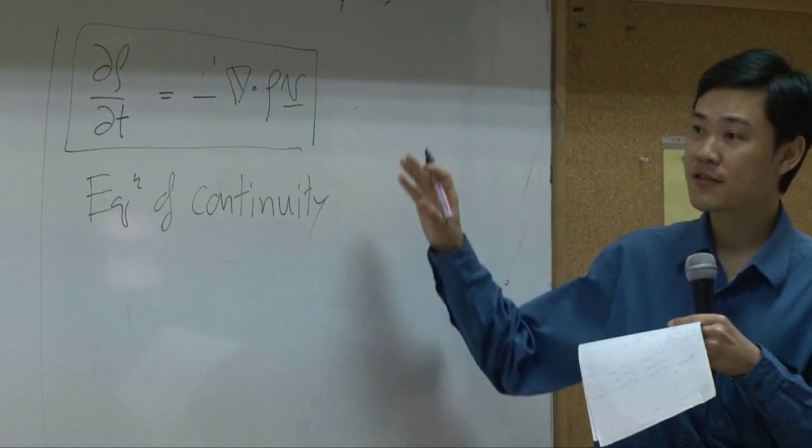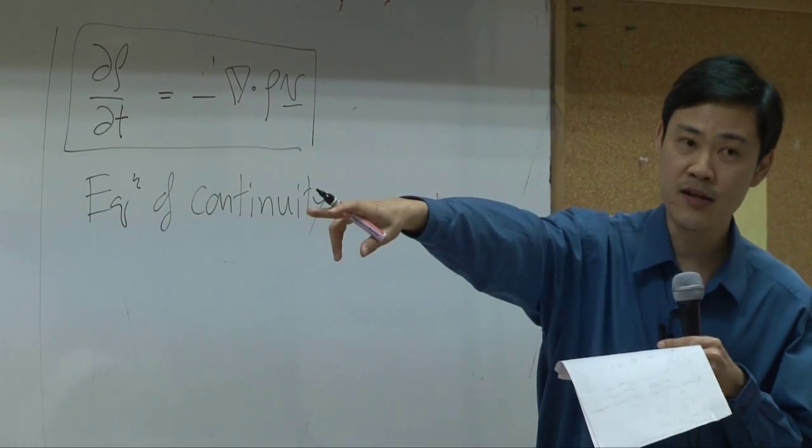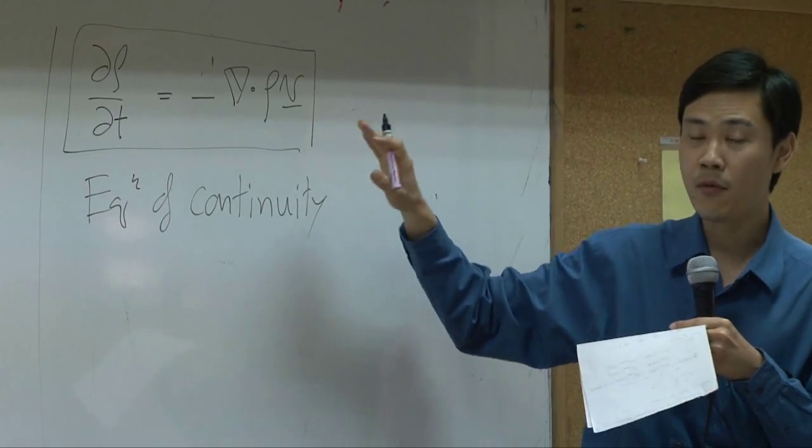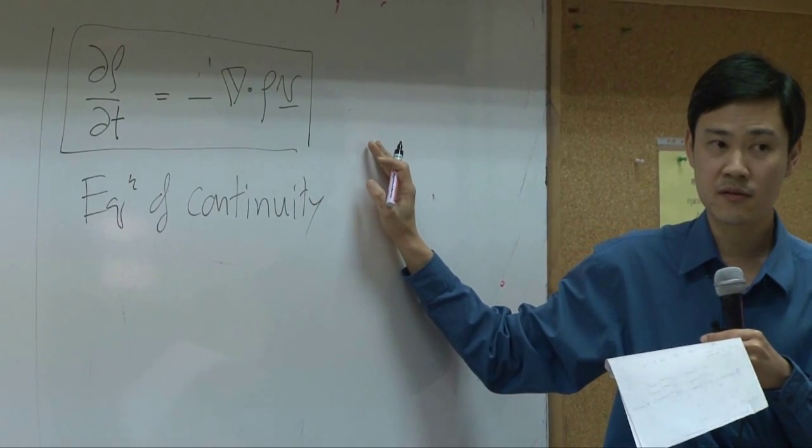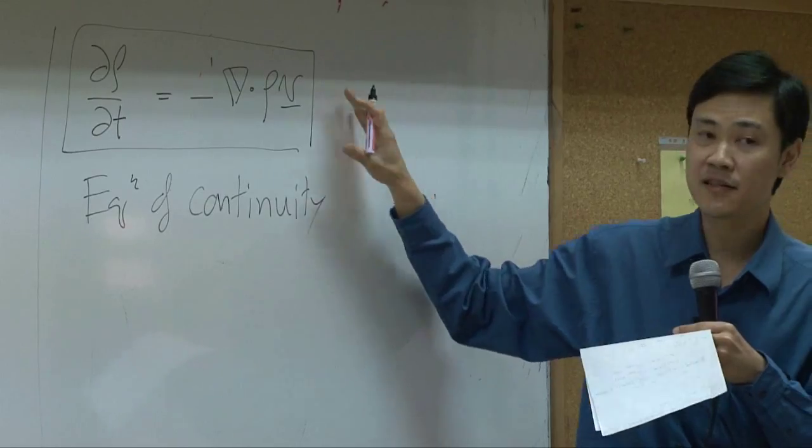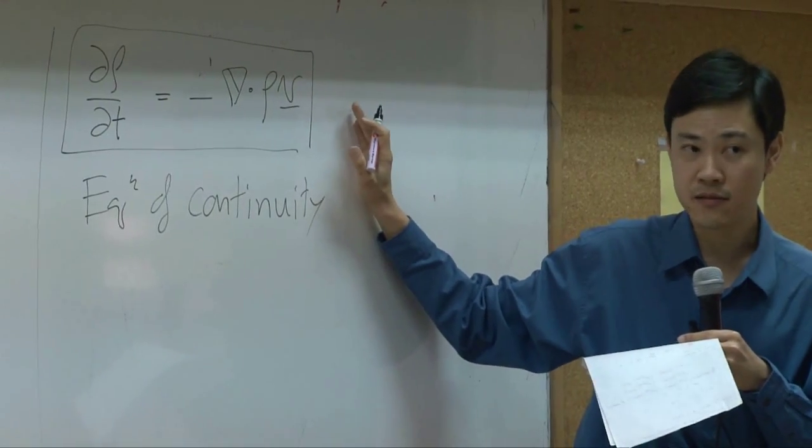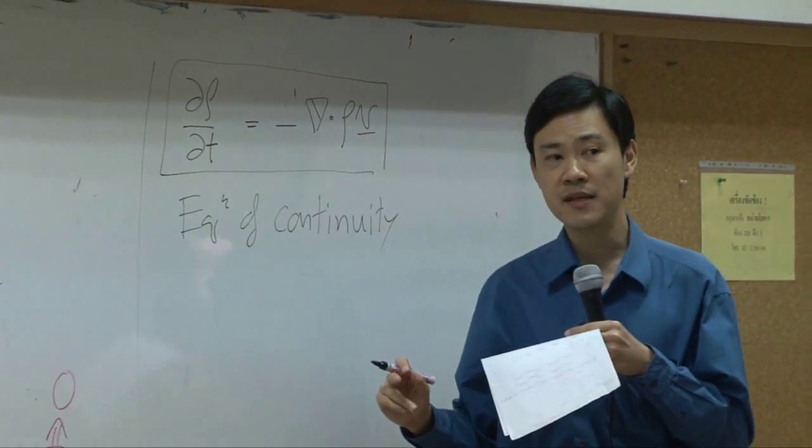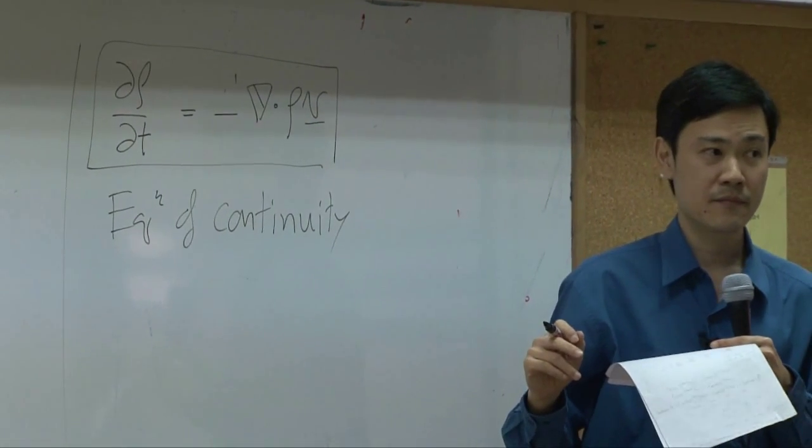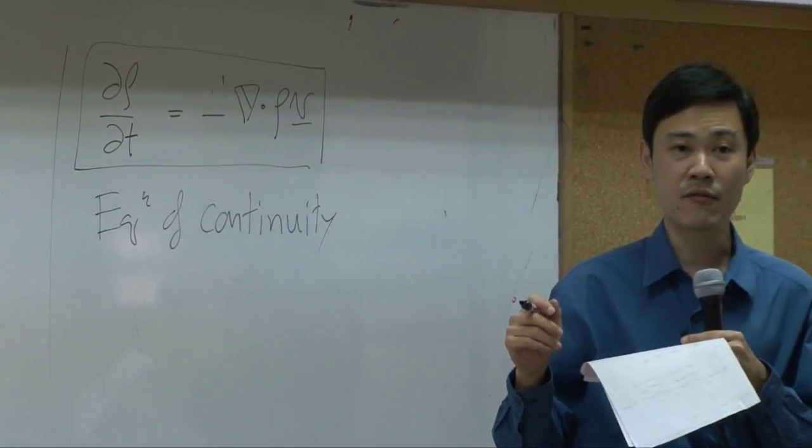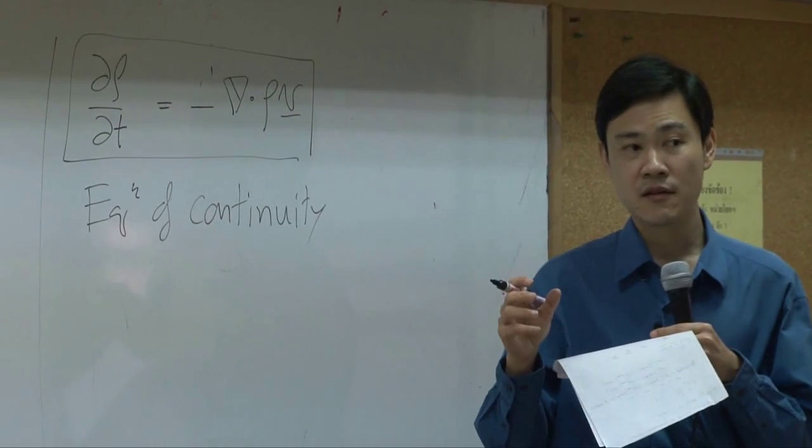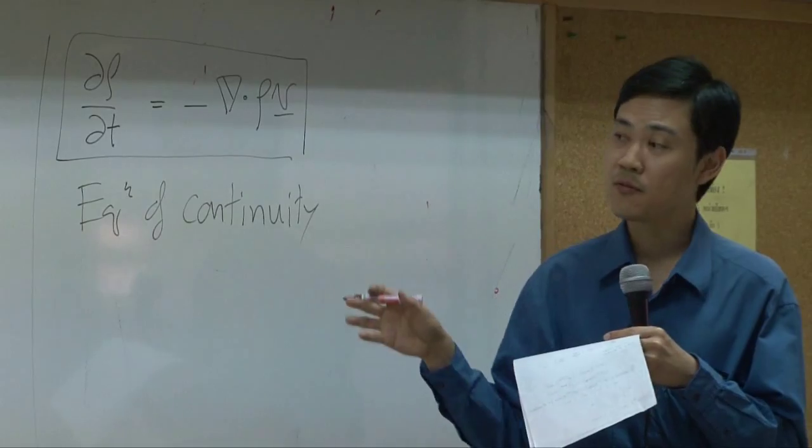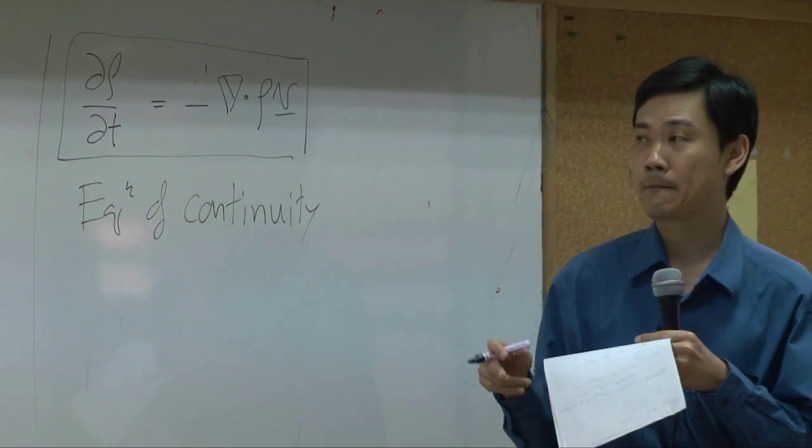So what's the difference between that equation continuity and this equation? They're both continuity equation. In the sense, this is overall mass balance. But that one is mass balance of specie i. Just like in your principle calculation, you have mass balance for one specific specie and also overall mass balance.